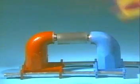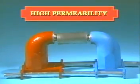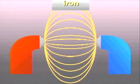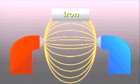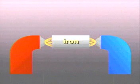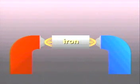Iron and nickel have high permeability and so are strongly drawn to magnetic fields. A highly permeable material can concentrate flux lines in a small area. As a result, highly permeable materials are chosen when attraction to a magnet is needed, such as the magnetic catch on this cabinet door.